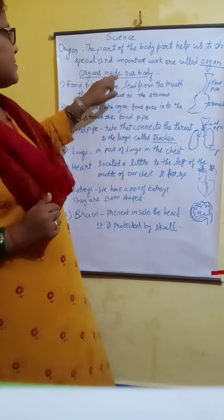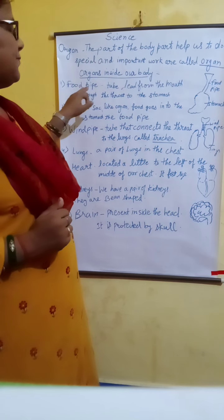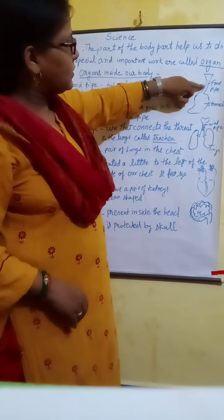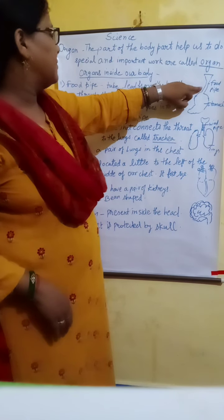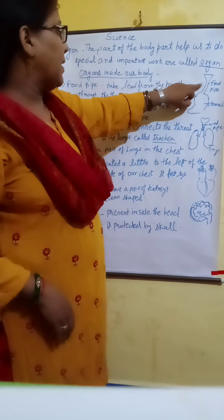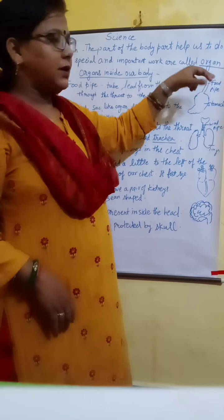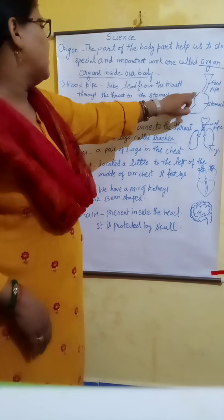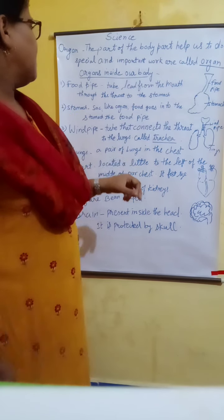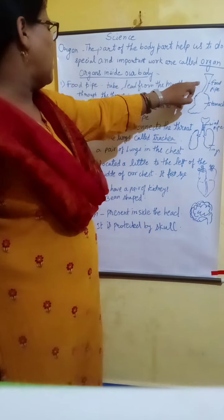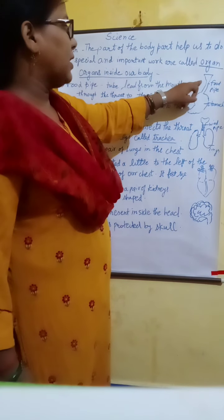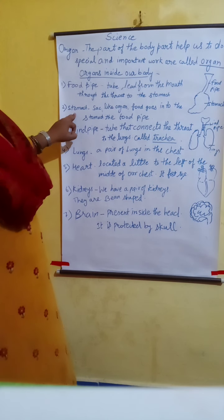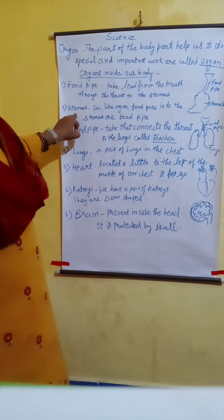The first internal organ is the food pipe. The food pipe is a tube-like structure. It leads from the mouth, through the throat, to the stomach.